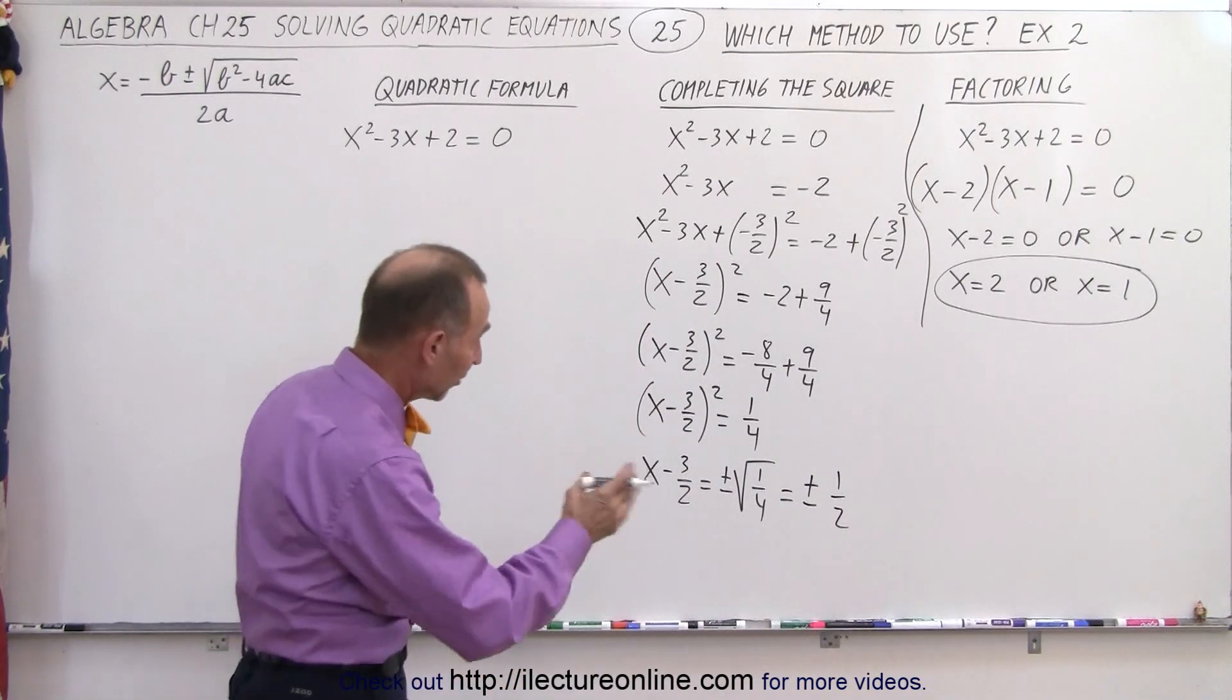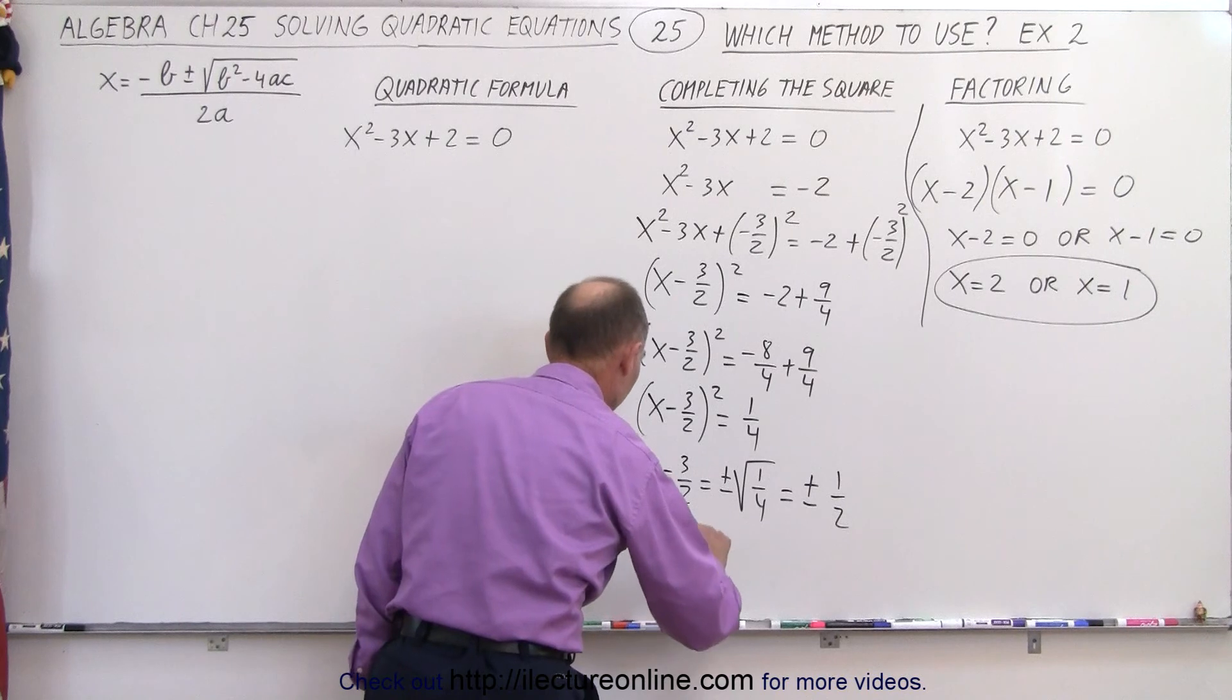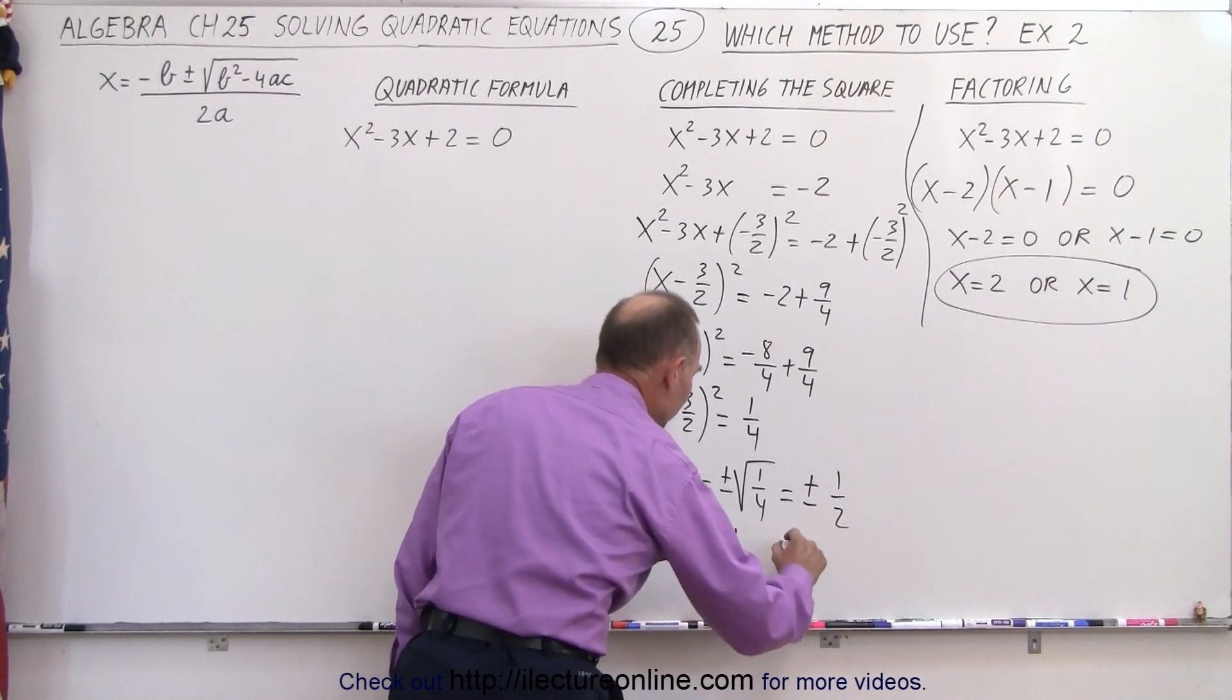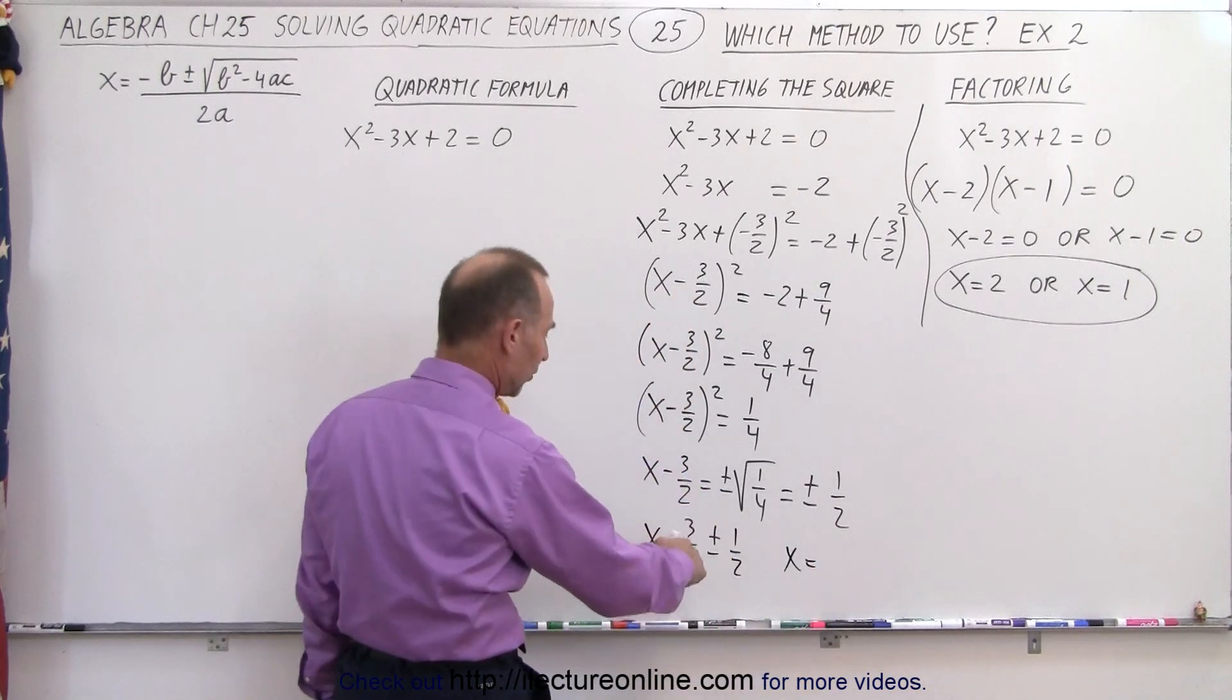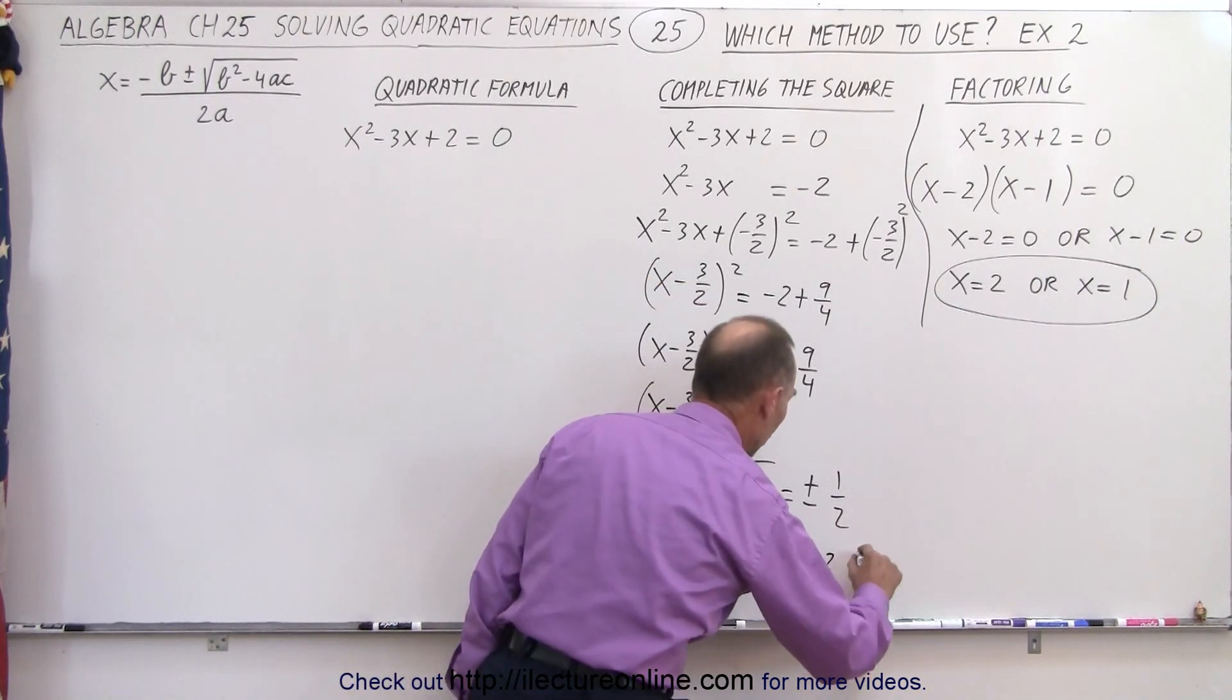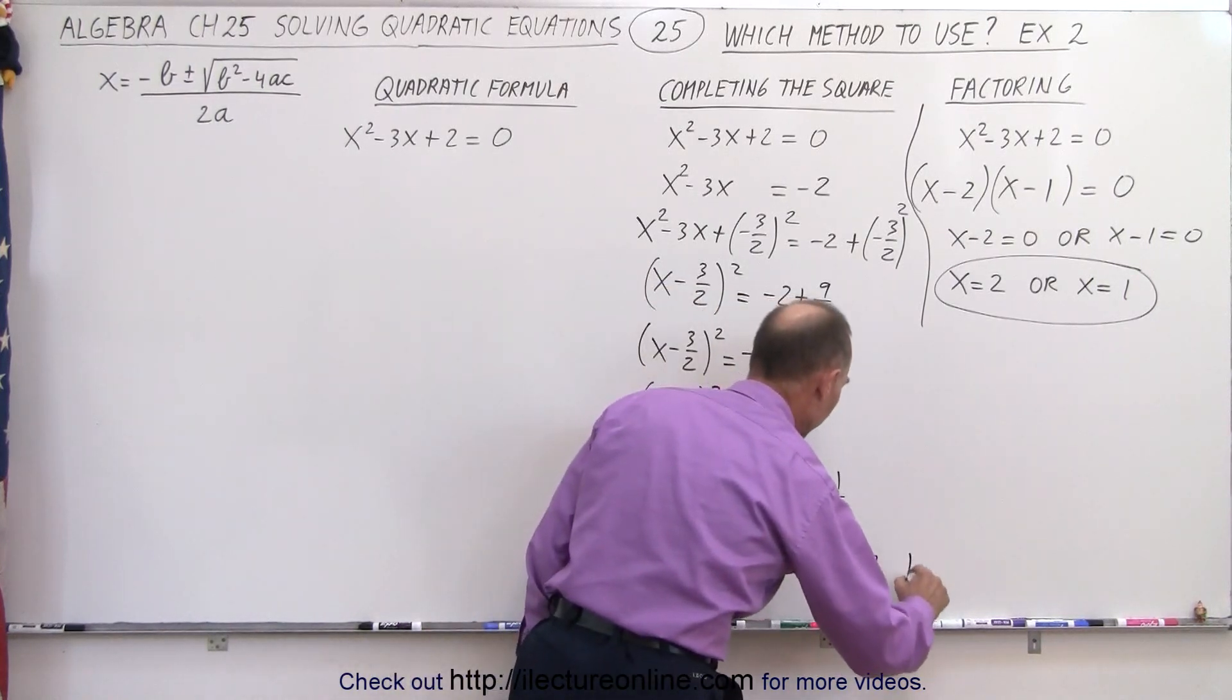Now I can move the minus 3 over 2 over. So I get X is equal to 3 over 2 plus or minus 1 half, which means that X is equal to, when I add the 2 together, that gives me 4 over 2, which is 2. Or when I subtract, I get 1.